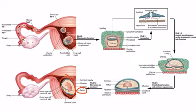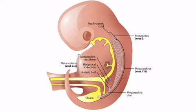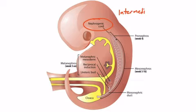But for our discussion, we're going to go to an earlier point around weeks four to five when the nephrogenic cord gives rise to the renal system. So let's go to a new diagram to show that nephrogenic cord. You can see the nephrogenic cord labeled right here, and this comes from the intermediate mesoderm, and it runs this length from top to bottom.